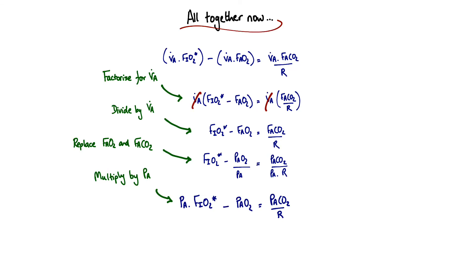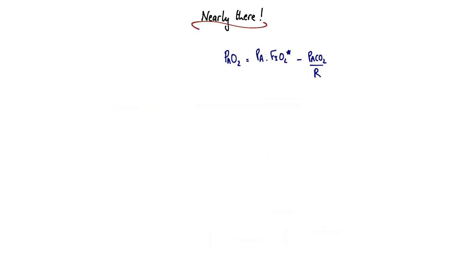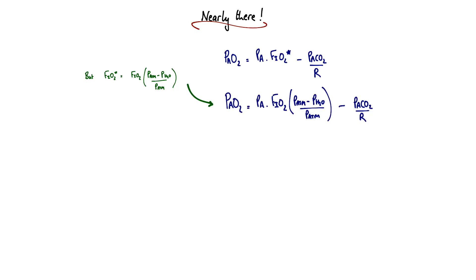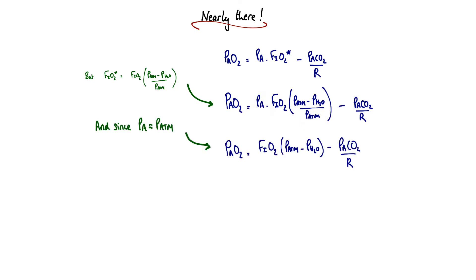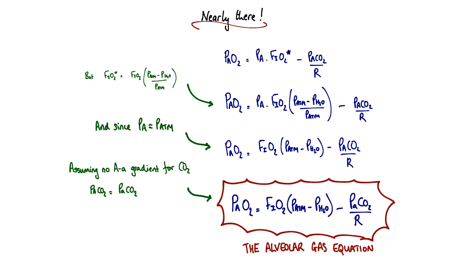We then multiply by Pa and rearrange to get PAO2 as our primary term. We recall the full term for FiO2 star — the fraction of inspired oxygen corrected for the addition of water vapour upon humidification — and substitute that in. We recognise that the average alveolar partial pressure equals atmospheric pressure, so those terms cancel. The final assumption is that there's no A-a gradient for CO2, allowing us to convert alveolar partial pressure of CO2 to arterial partial pressure of CO2. That final assumption gives us the alveolar gas equation.